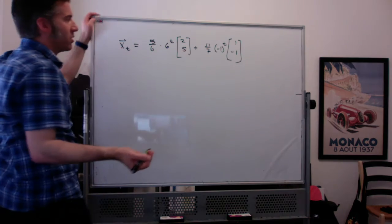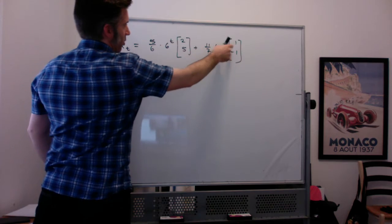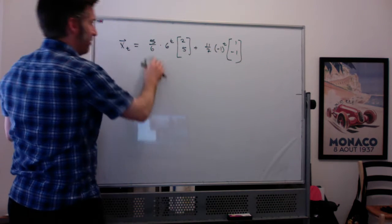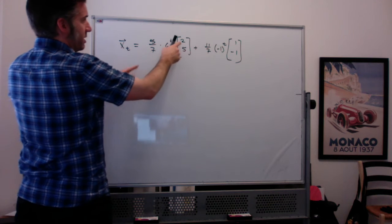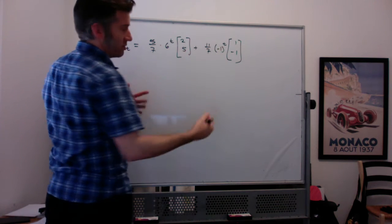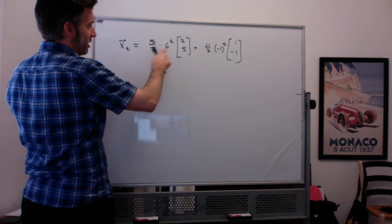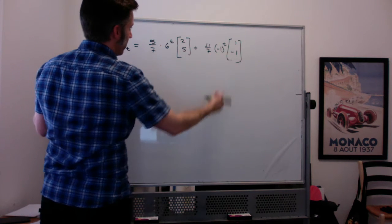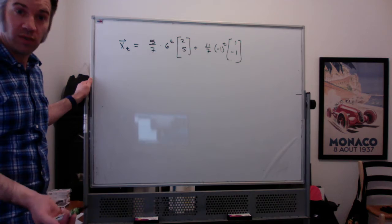And if you plug in 0 for t, you get 5 sevenths times 2 plus 11 sevenths times 1, which is 10 sevenths plus 11 sevenths, which gives you 3. And then for the second coordinate, you get 5 sevenths times 5 plus 11 sevenths times negative 1, which is 25 sevenths minus 11 sevenths, which is 14 sevenths, which is 2. So that gives you the initial condition.